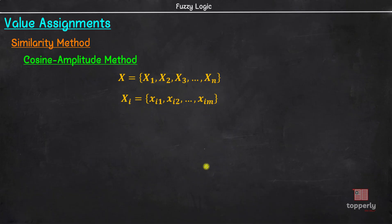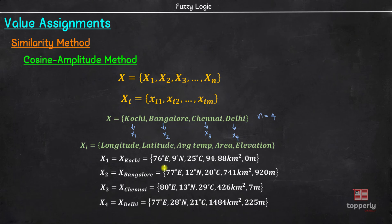To understand this better, consider a data array X which is a collection of cities. So, here X1 is Kochi, X2 is Bangalore, X3 is Chennai and X4 is Delhi. Since there are only 4 cities in dataset X, the value of n here is 4. Now, each city can be described by a set of properties like longitude, latitude, average temperature, area and elevation. For instance, Kochi is at a longitude of 76 degree east, latitude of 9 degree north with an average temperature 25 degree Celsius and area 94.88 km² and elevation 0 meter. Since each city is described by a set of 5 properties, the value of m here is 5.